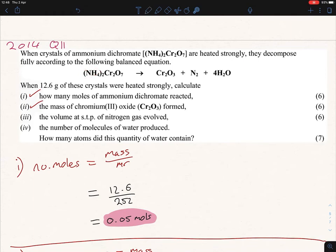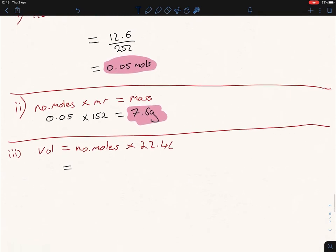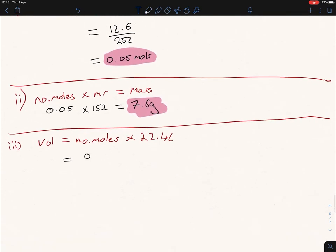We can see here it's 1 is to 1 again. So therefore we have 0.05 moles. And we're going to multiply that by 22.4 and our answer is then for that, if we plug this into the calculator, will be 1.12 liters.